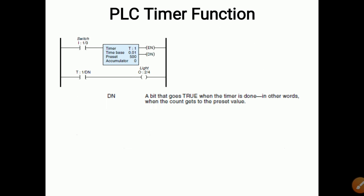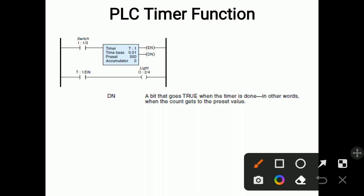Now we will see the diagram of the PLC timer function. You can see here the PLC timer box — this is the input to the PLC timer, EN is one condition, and DN is also one condition. Inside the box some values and functions are shown, and here the output is a light that should turn on. A DN contact is provided here as well.